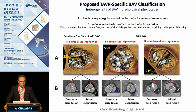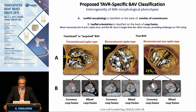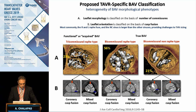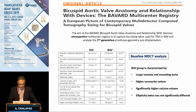Recently, a publication classified TAVR patients according to bicuspid valve anatomy based on leaflet morphology as functional bicuspid valves and true bicuspid valves, categorized according to the existence of a raphe — with-raphe type and non-raphe type, the raphe type occurring in up to 55% of cases — and according to leaflet orientation as coronary cusp fusion and mixed cusp fusion.